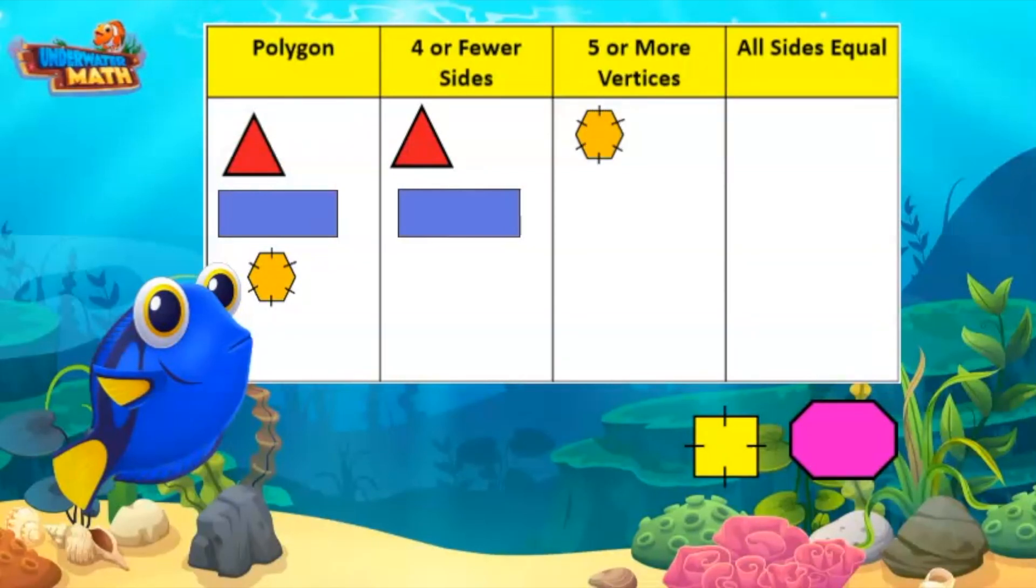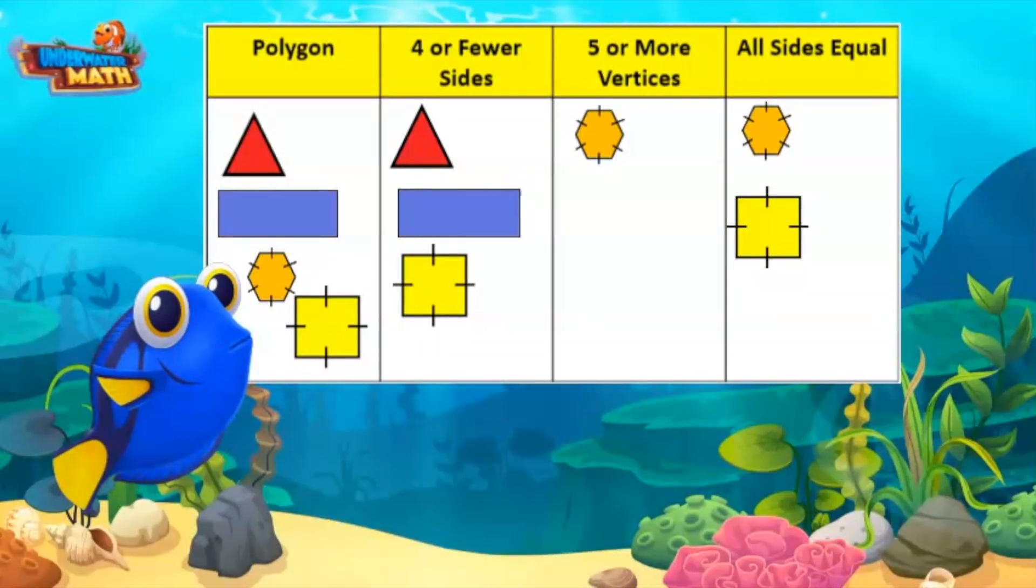The square is a polygon, has four or fewer sides, and has all equal sides. The octagon is a polygon and has five or more vertices.